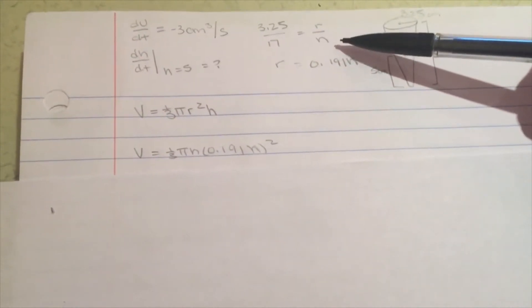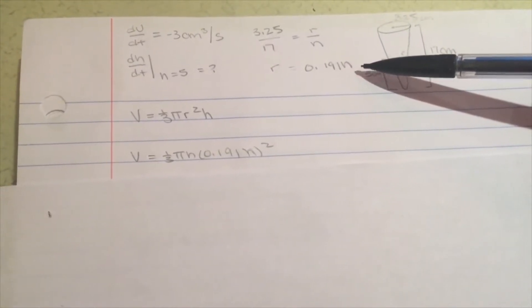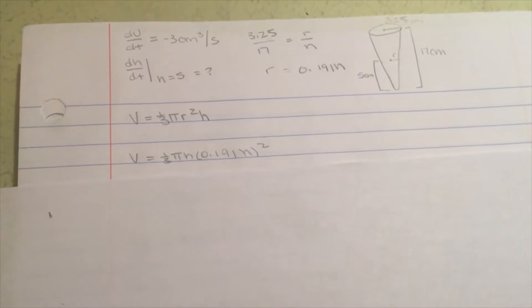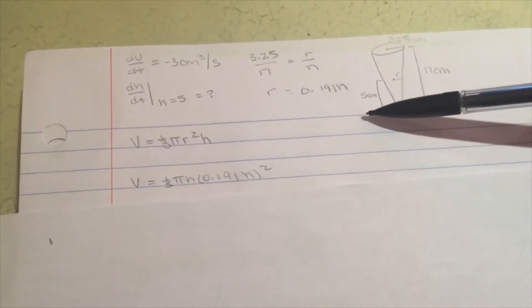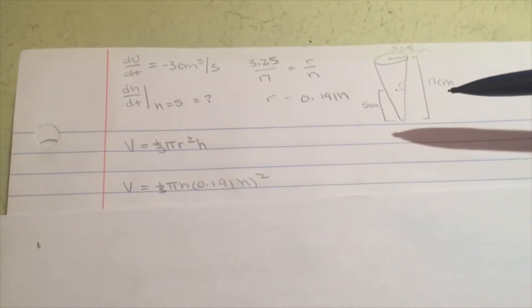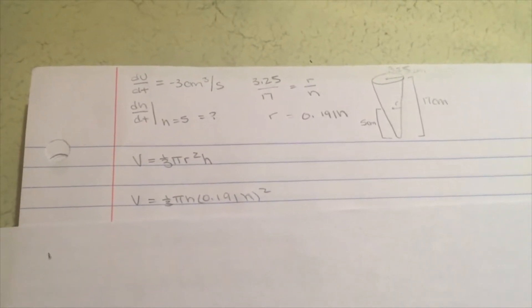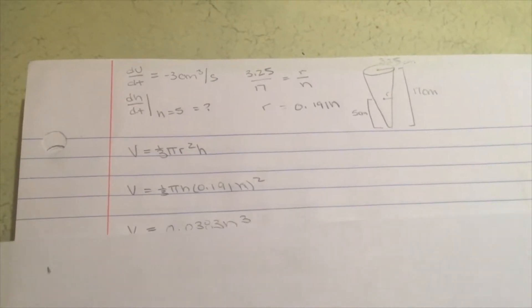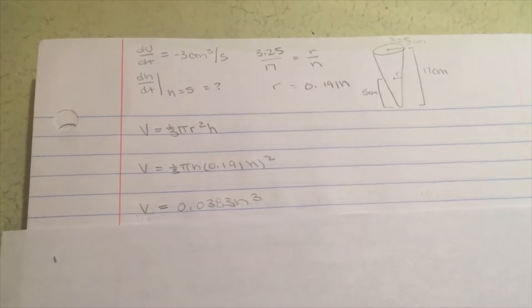With simple algebra, we calculate that the radius equals approximately 0.191 times the height. We then substitute this for the radius to get that the volume equals one-third times pi times h times 0.191h squared. We can simplify this equation to that the volume equals 0.0383 times the height cubed.